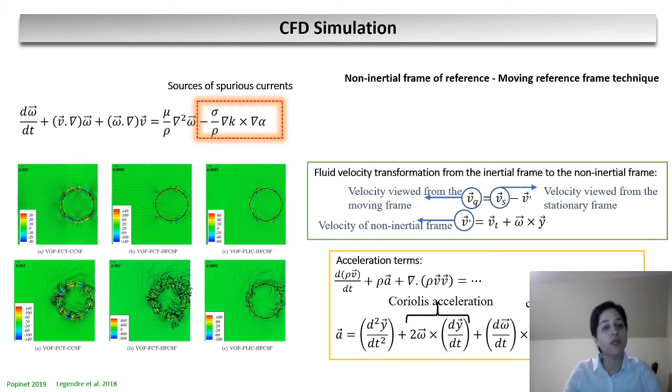Different models for surface tension in terms of height function, continuous surface tension, and sharp surface tension models are needed to be checked to find the best model for this case.